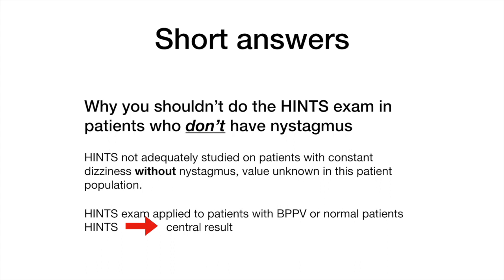And even worse, if you applied HINTS to patients with transient vertigo such as BPPV, you would see a normal head impulse test. This would erroneously lead you to think that the patient had a central cause for their vertigo, because the head impulse test is in the HINTS exam to identify a vestibular nerve problem and thus diagnose vestibular neuritis. BPPV patients don't have a vestibular nerve problem — they have an otoconia in their semicircular canal problem.